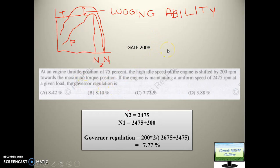So sensitivity will be 2 times N1 minus N2 divided by N1 plus N2. N1 is 2675 and N2 is 2475. So C will be the answer for this. You can see that with a combination of governor regulation and engine characteristic curve, they use to ask a lot of questions. So one thing you should keep in mind: this is no load condition, this is load condition, and this is lugging ability or extra torque. This whole value is peak torque, this is lugging ability or torque reserve, and this is working torque. These terminologies will be used in engine characteristic problems and you can solve any question with this.